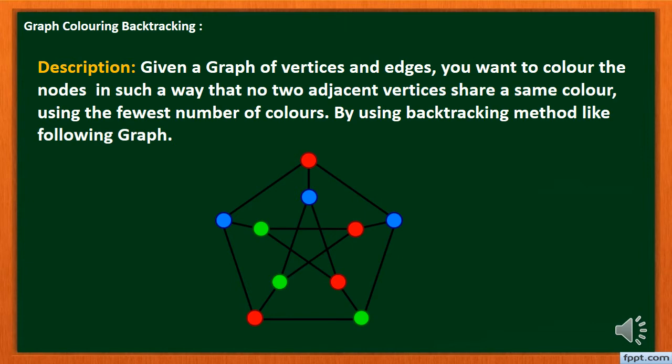Given a graph of vertices and edges, you want to color the nodes in such a way that no two adjacent vertices share the same color, using the fewest number of colors. By using backtracking method like following graph.